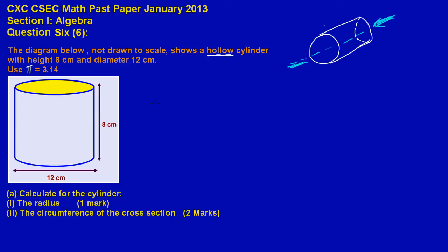Let us move on now. So here in part A they are asking us to calculate for the cylinder 1, the radius and that's a 1 mark, easy 1 mark. And part 2, the circumference of the cross section and that's another easy 2 marks.